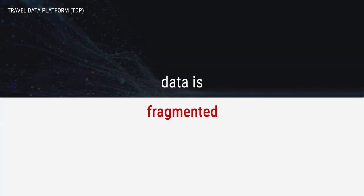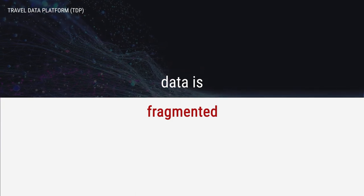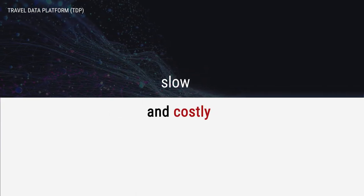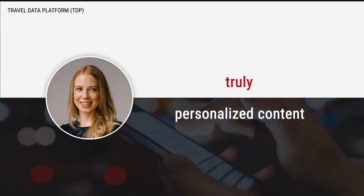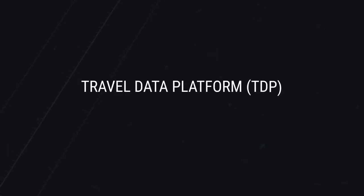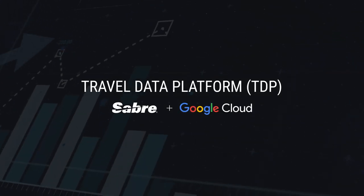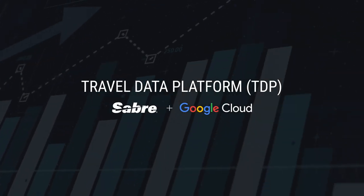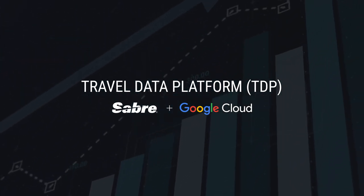Data in the travel industry is fragmented. Connecting siloed data sources is slow and costly, and because of that it's difficult to build a holistic view of the traveler and to provide truly personalized content. Sabre and Google are building a travel data platform, or TDP, that aggregates data more efficiently.